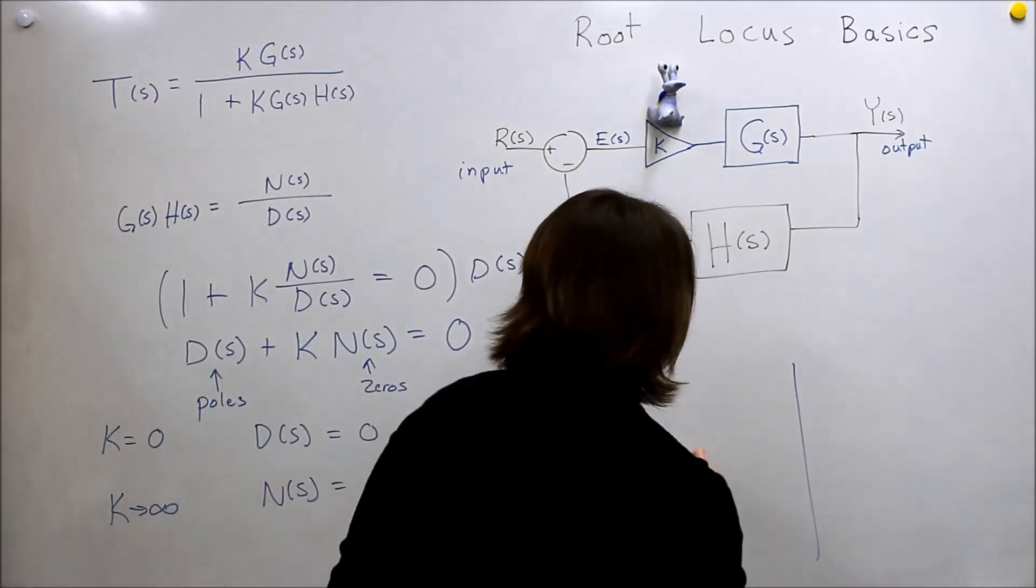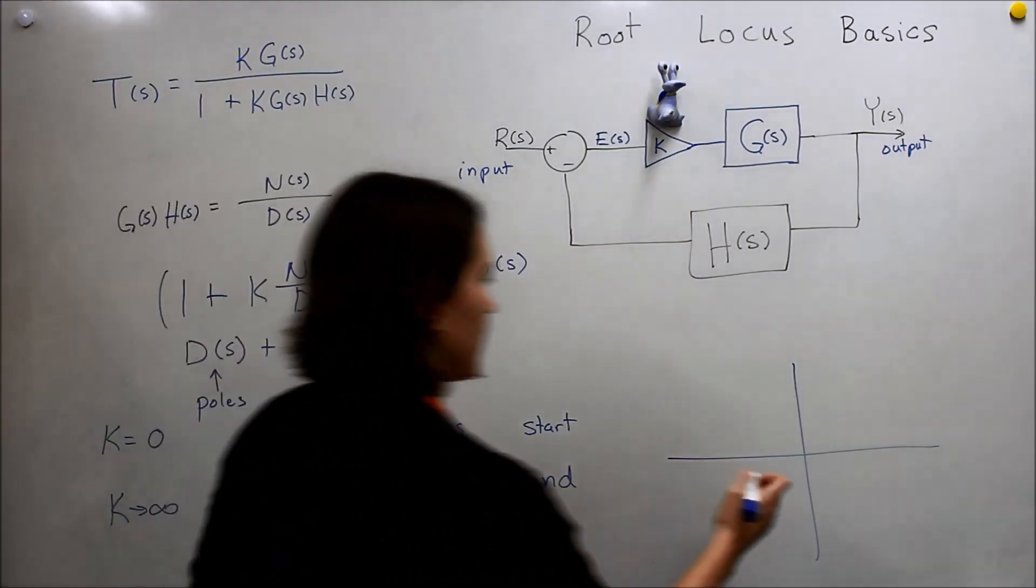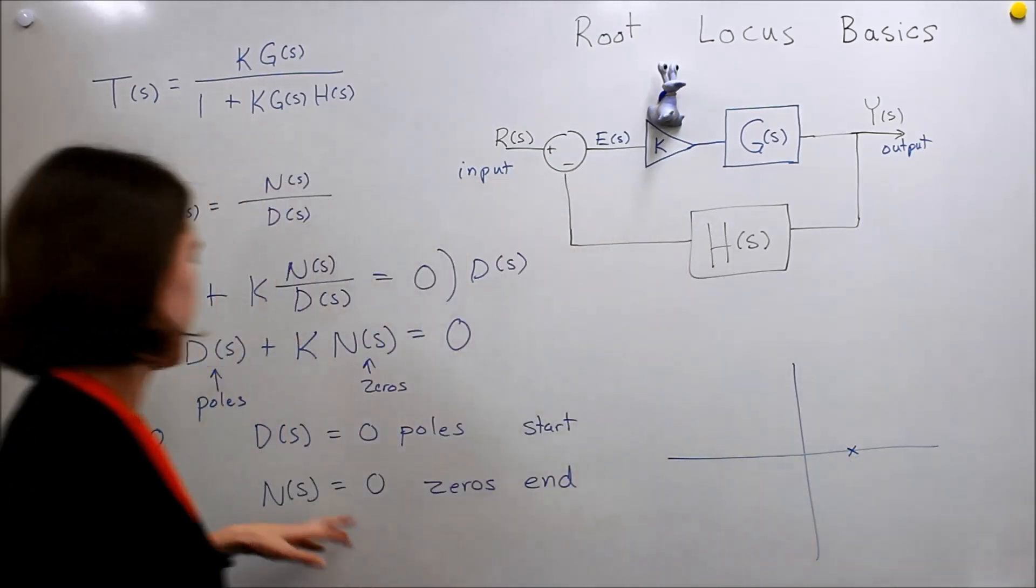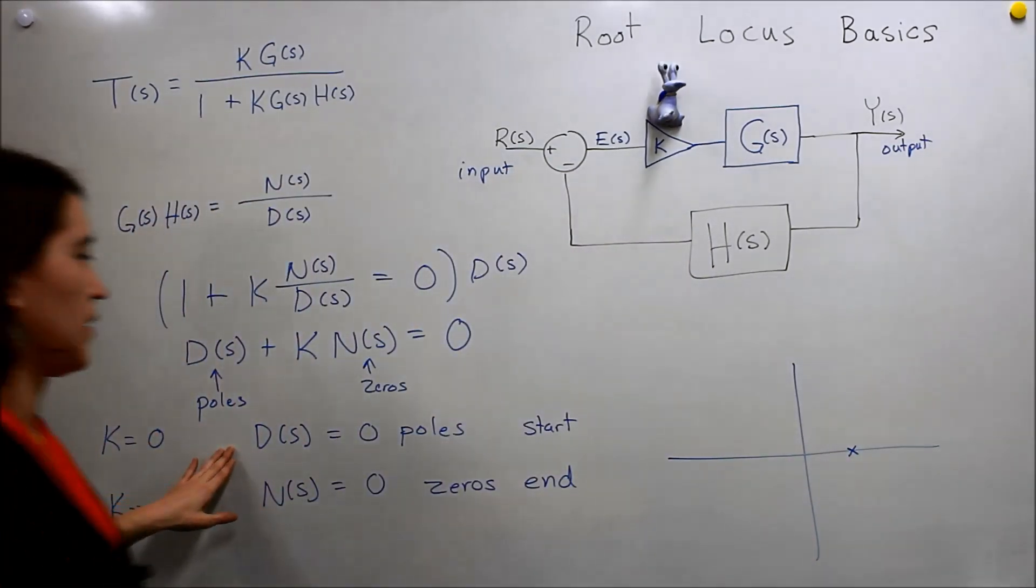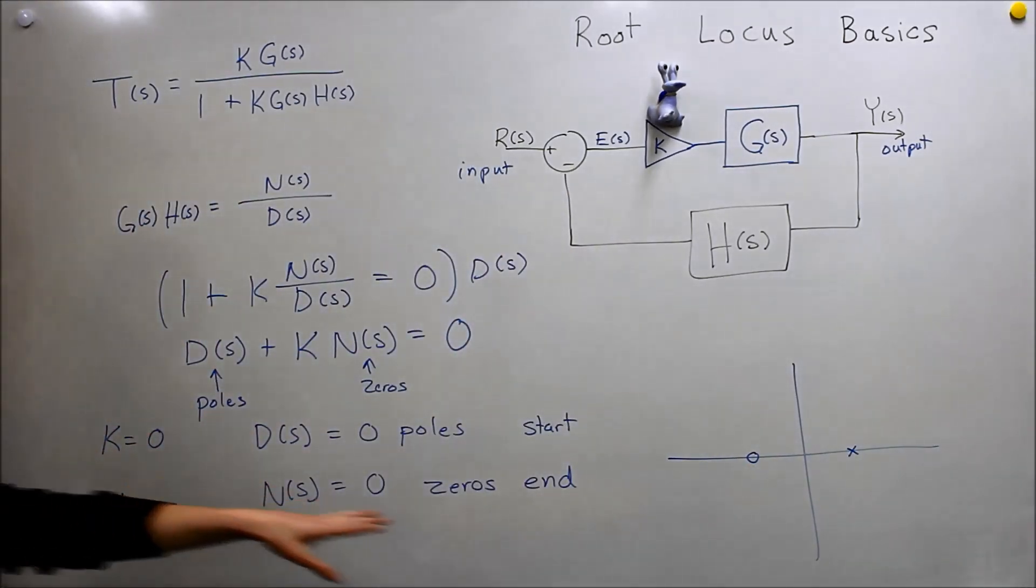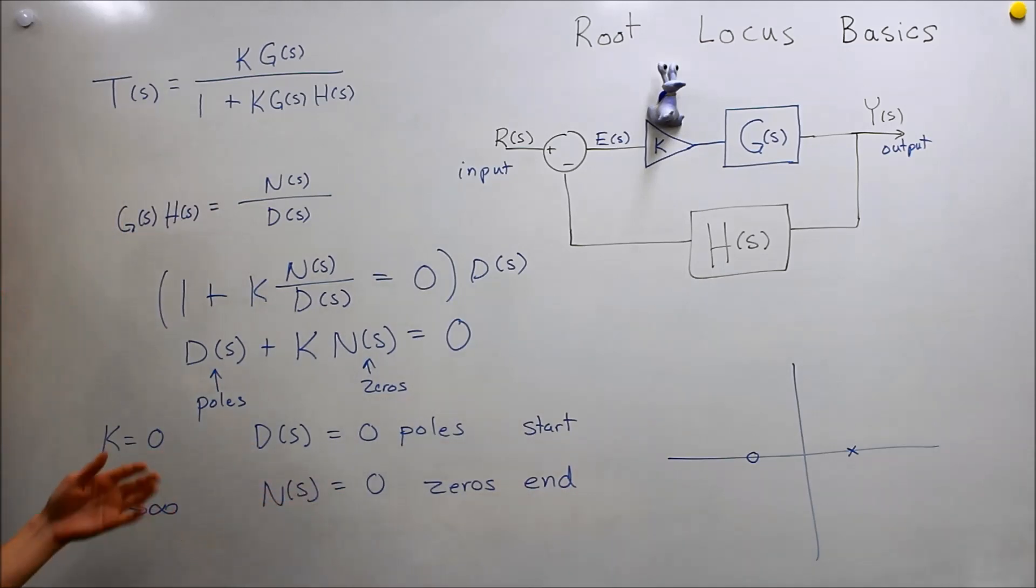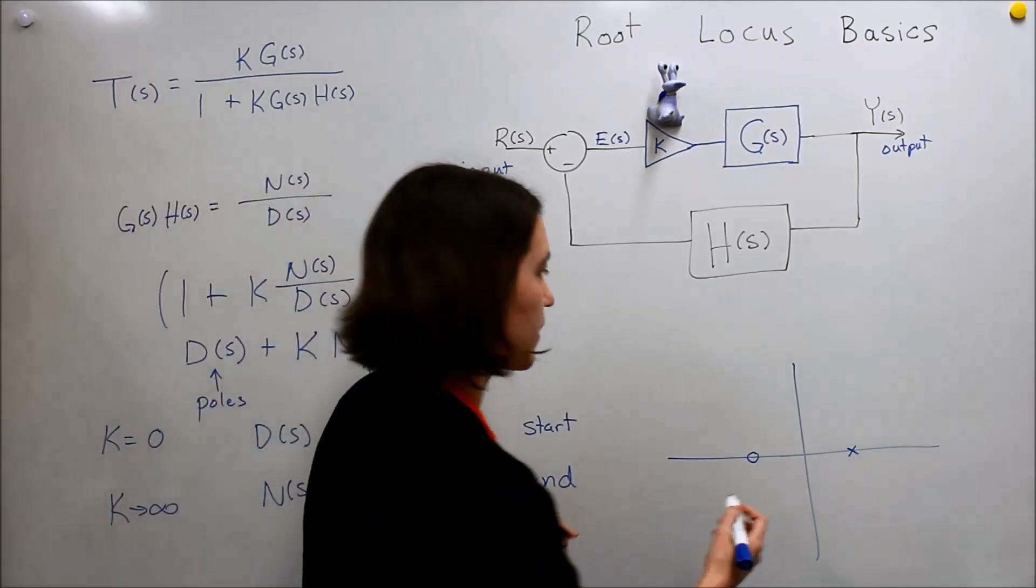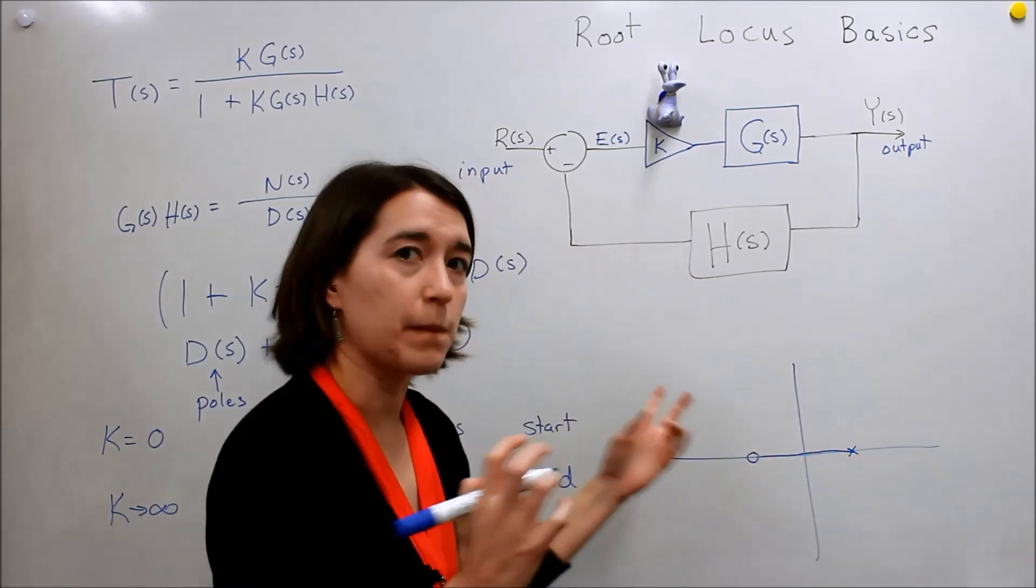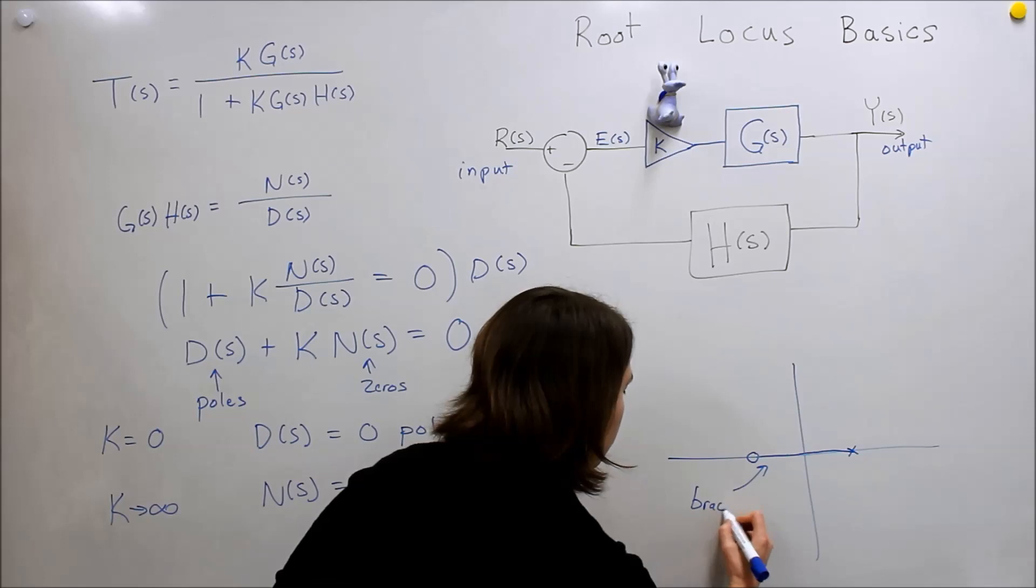Say we have, I'm just going to make an arbitrary example here. If we started and we had an X, a pole from our original system here, and we had a zero here, this would be our starting point and our end point. Also note that we're going to have a bunch of different lines going through here, so this line will look like this, that's one branch is what we call it, so this is a branch.